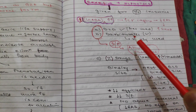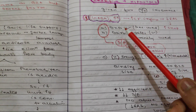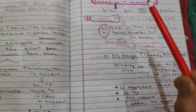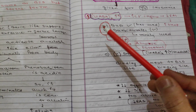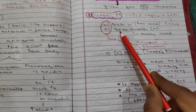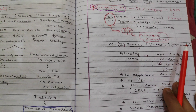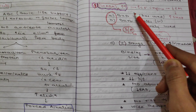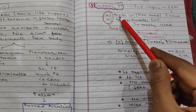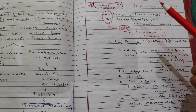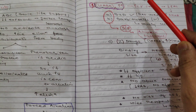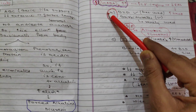Benzodiazepines are frequently used and barbiturates are rarely used for insomnia. We have discussed benzodiazepines and barbiturates in detail in our previous videos, so please watch those to clear your concepts. The major side effect of both benzodiazepines and barbiturates is their abuse potential.